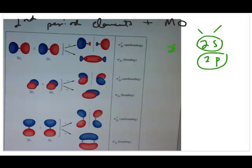that for 2s orbitals, what you get is just sigma 2s and sigma 2s star. And then for the 2p orbital, you can get two different types of molecular orbitals. You can get the sigma or you can get the pi molecular orbitals. And then the sigma,